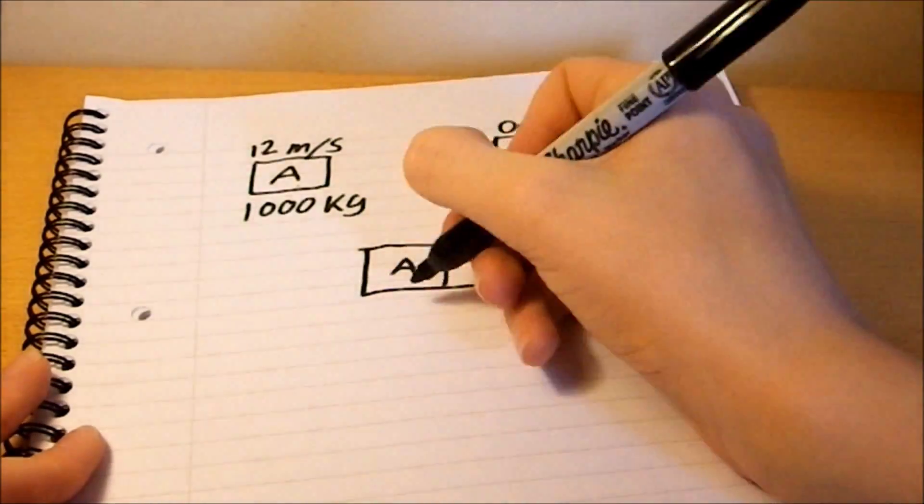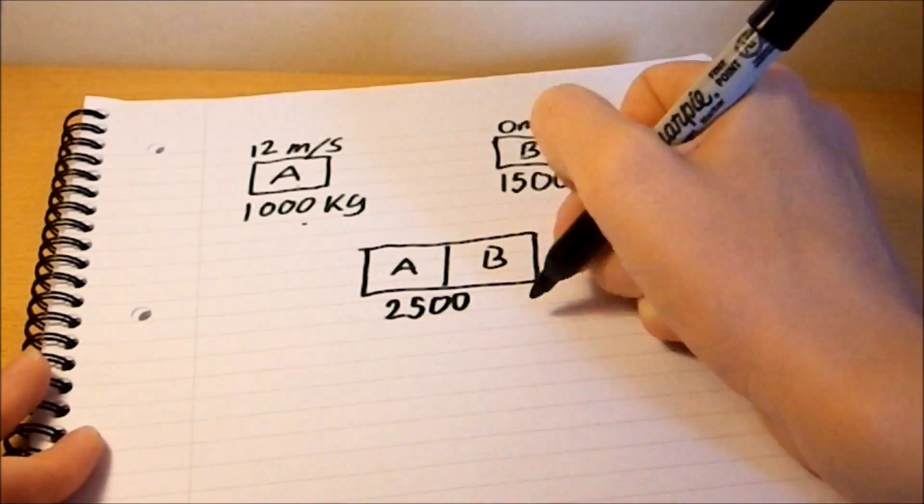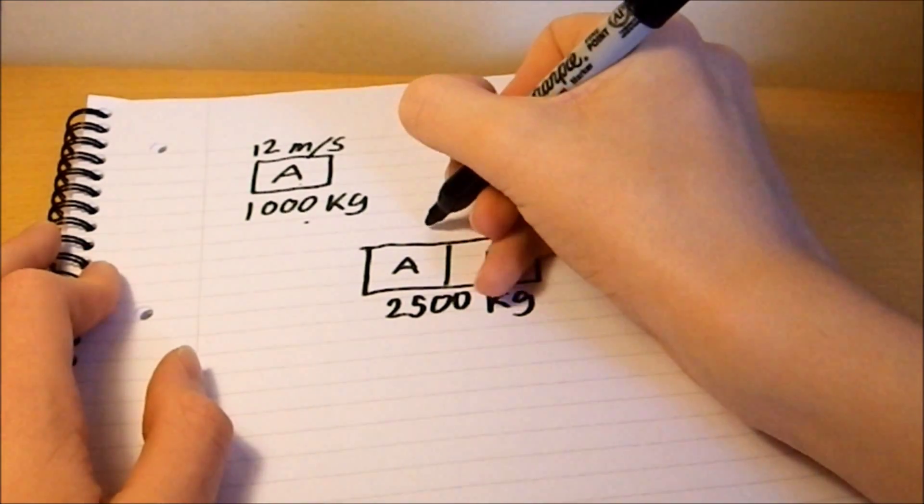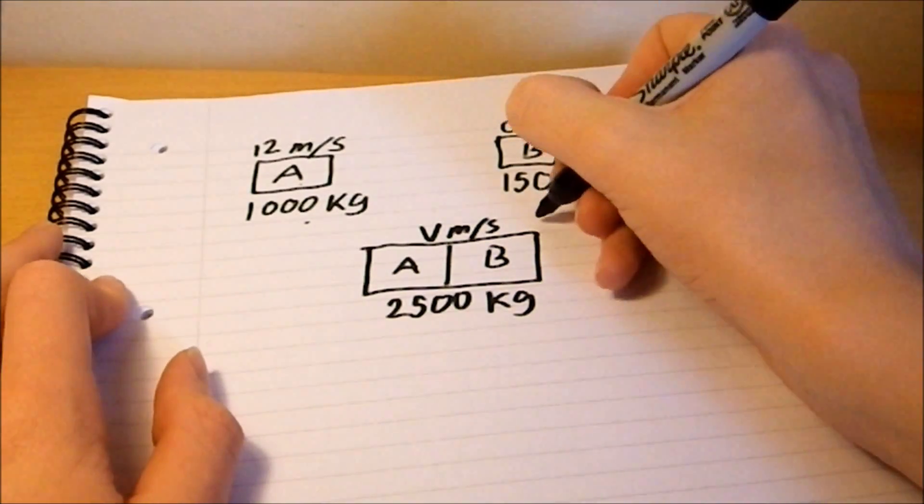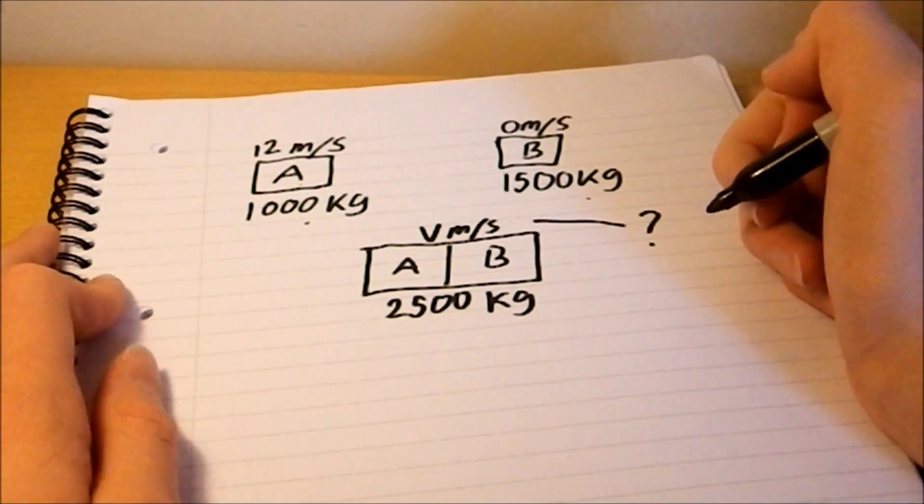Car A and car B become one entity, car AB, which has a mass of, well, add those two together and you get 2,500 kilograms. And we want to work out the speed at which it will be travelling. So, we'll put V meters per second. So, what's V?